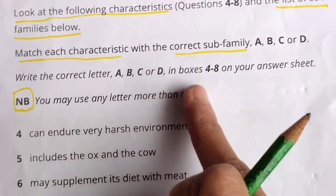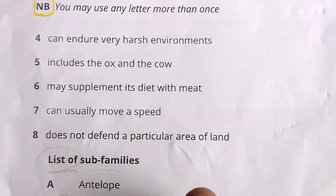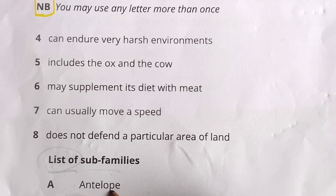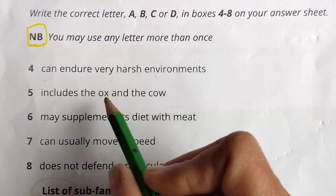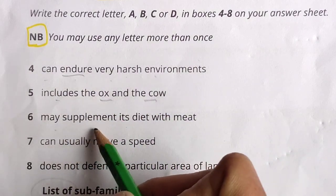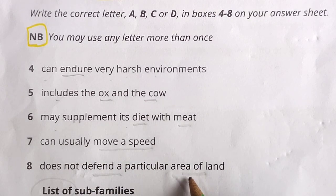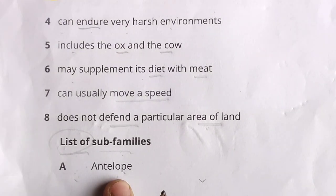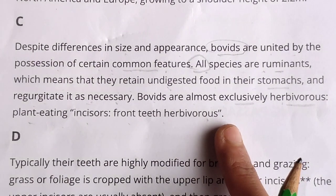Now questions four to eight are matching questions. We have to select from options A, B, C, D — animal sub-family names are given. The characteristics to match are: can endure very harsh environment; includes the ox and the cow; may supplement its diet with meat; can move at speed; does not defend a particular area of land. The sub-family options are: antelope, bovine, caprine, and one more. Let's read through the paragraphs to match these.